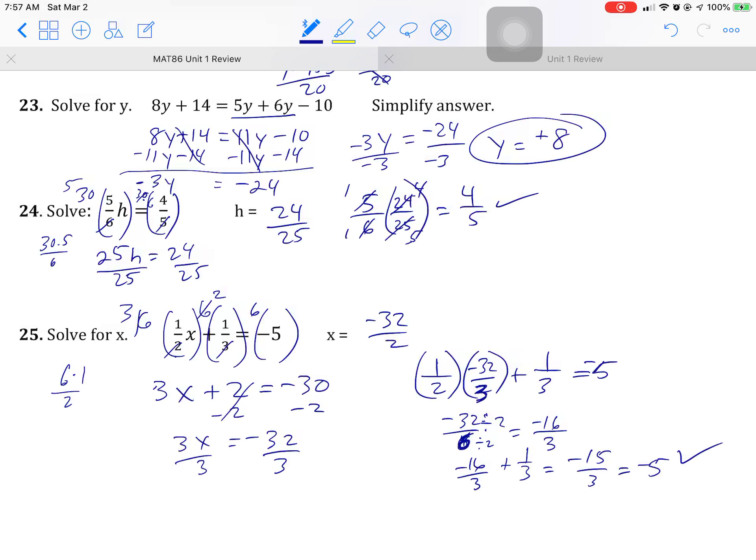So negative 16 over 3 plus 1 third is negative 15 over 3, which is a negative 5. Phew. Making sure. Sometimes I mess up on a check, which doesn't help. But I feel better about it. Alright. Thanks. That's it.